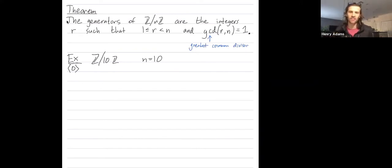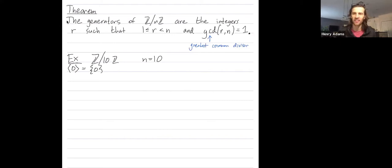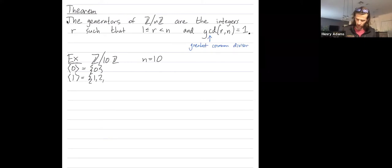What's the cyclic subgroup generated by 0? Well, I add 0 to itself a bunch of times, but I always get 0 and nothing more. What's the cyclic subgroup generated by 1? It's everything. I start with 1, add 1 to itself to get 2, add 1 to get 3, and so on. Once I add 1 to 9, I get 10, which is 0 mod 10.